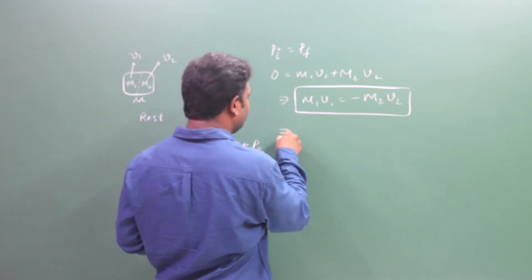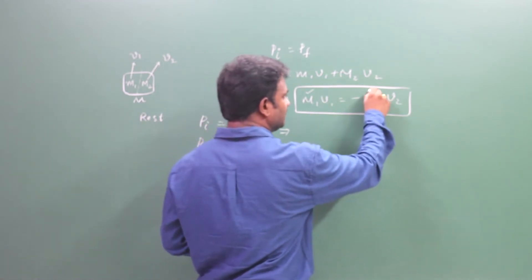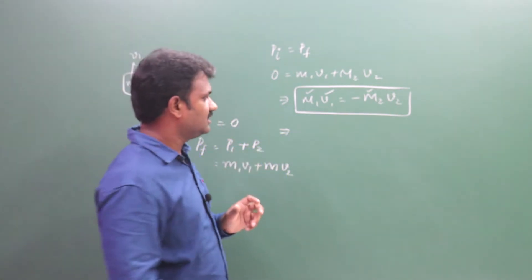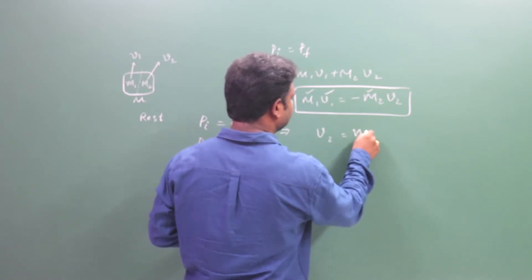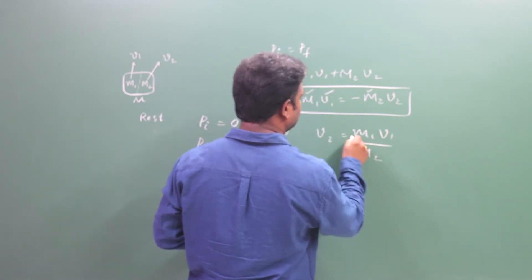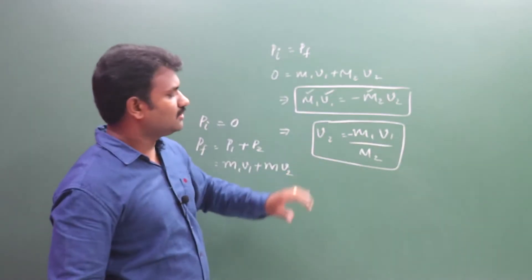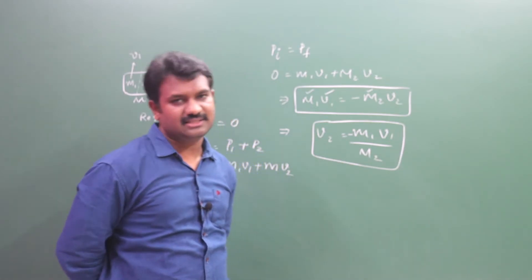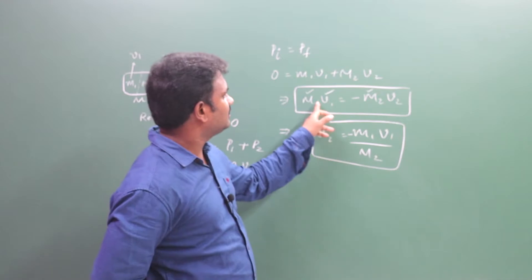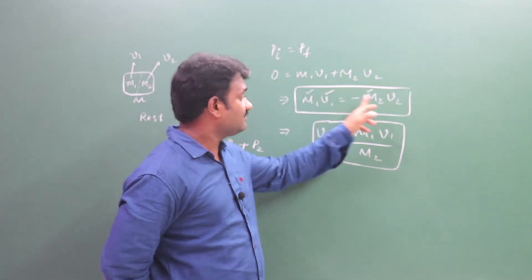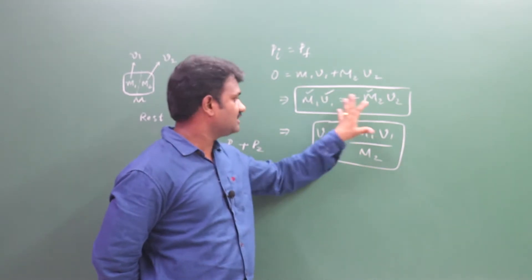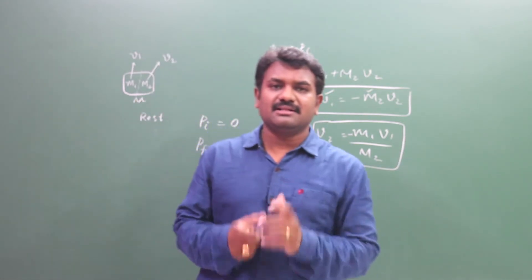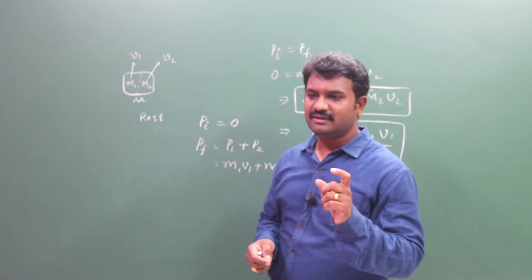If you know the mass of the first part, the mass of the second part, and the velocity of the first part, we can find the velocity of the second part. That is, V2 is given by minus M1V1 by M2. In problems involving an alpha particle coming out of uranium, you apply the same procedure to find the velocity or mass of the remaining nucleus.